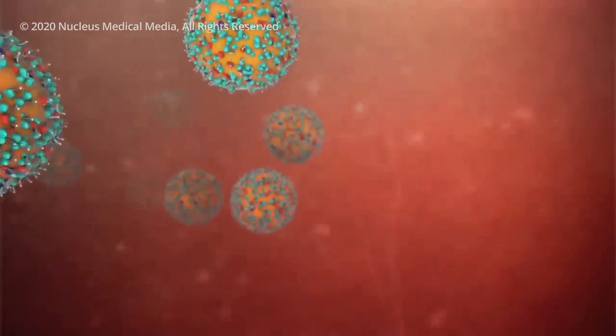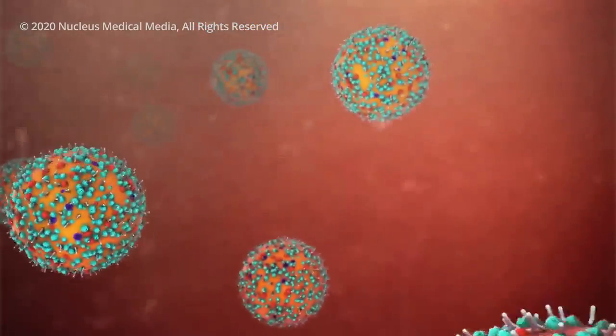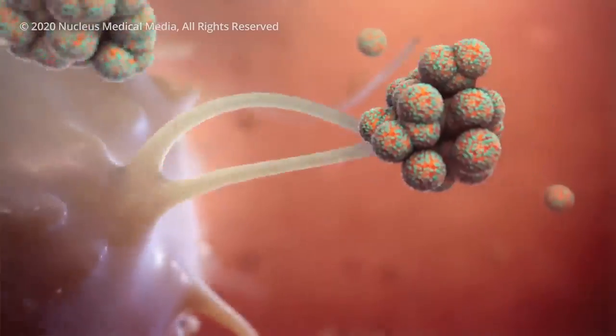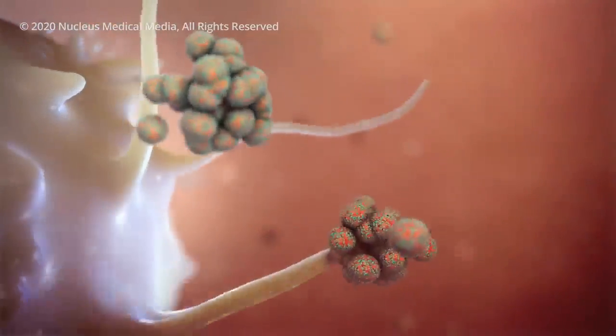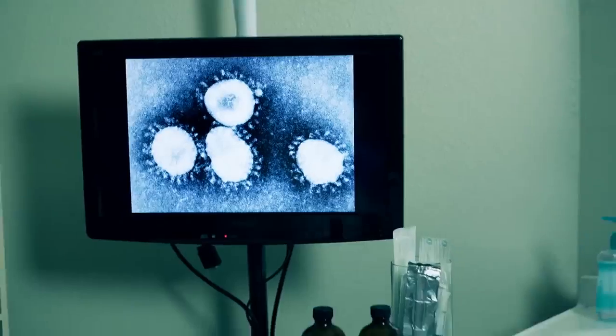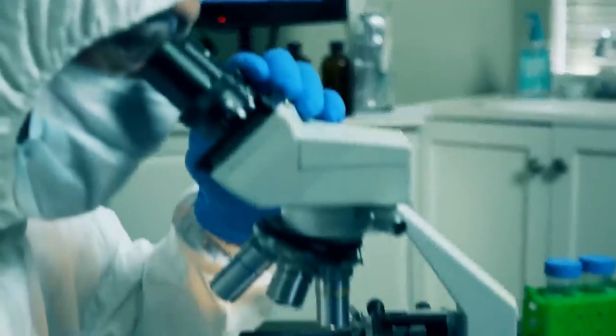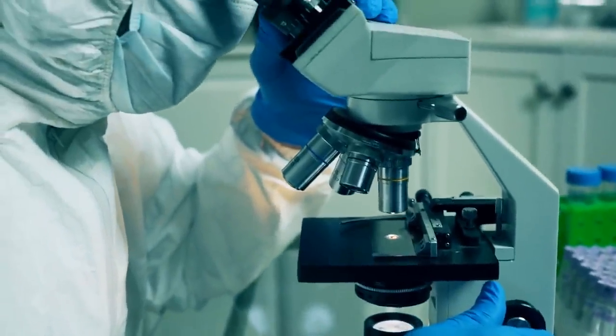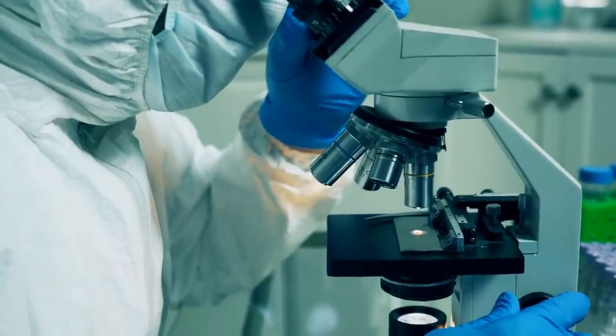If you then catch the real virus at a later stage, your body would recognize it and destroy it. In other words, your immune system is now primed. Collecting evidence on whether this will be possible, safe, and effective is part of what's taking researchers so long to develop a vaccine.